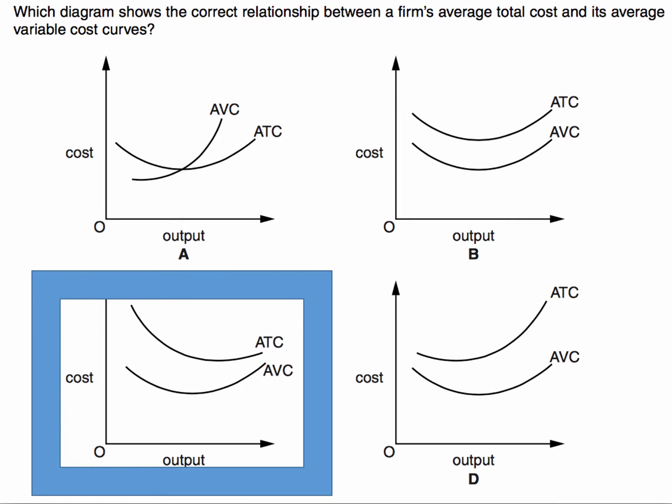C. The correct answer is C. Average variable cost lies below average total cost, but the gap between the two is getting smaller.